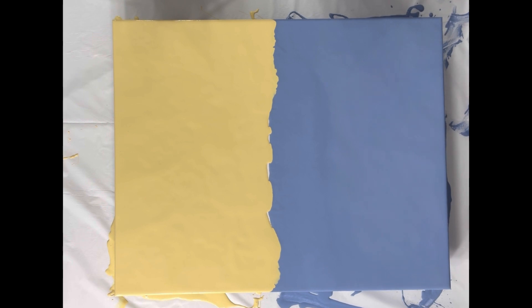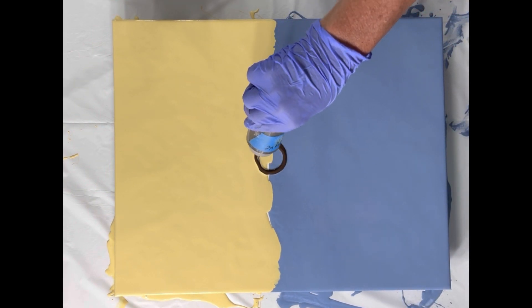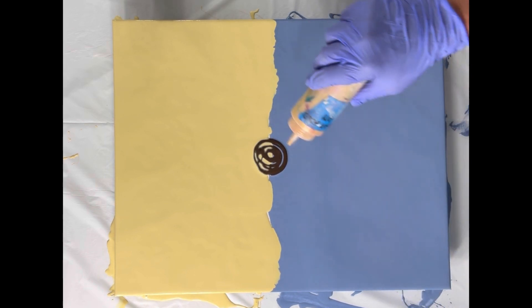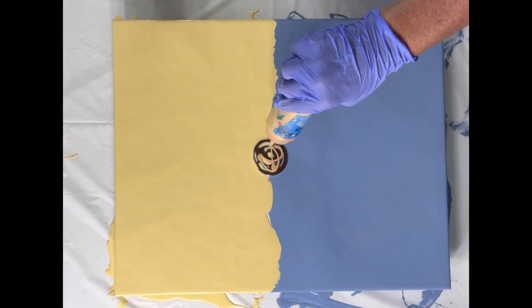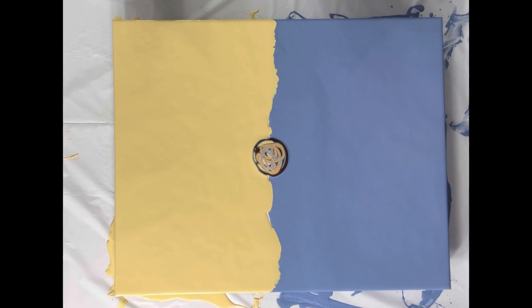So I think what I'm going to do for the center is I'm going to put just a little bit of Van Dyke Brown down right in the center here. It's going to be a small center. A little bit of gold and a little bit of silver. So when I blow out each side, I'll have a little bit of that to go with it.